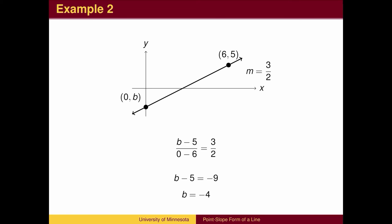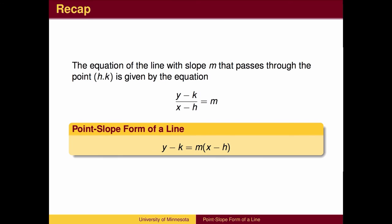Here is the direct calculation of the y-intercept for the second example. To recap, the point-slope equation of a line with slope m through the point (h,k) is given by the formula y minus k equals m times x minus h.